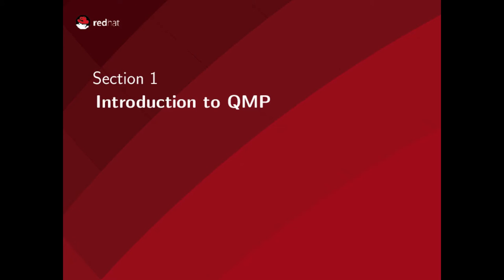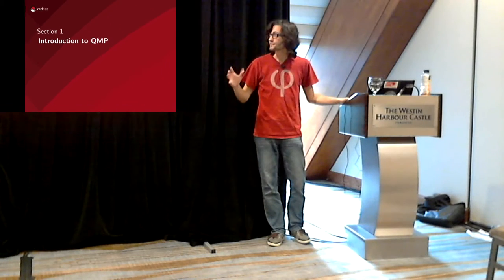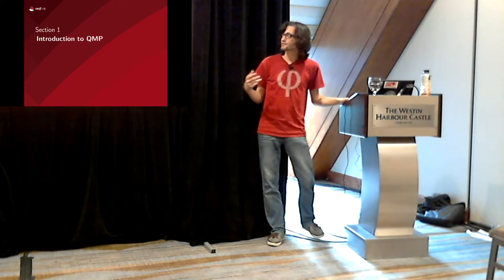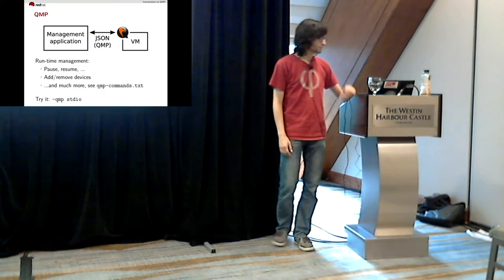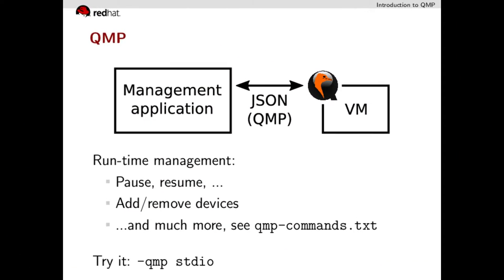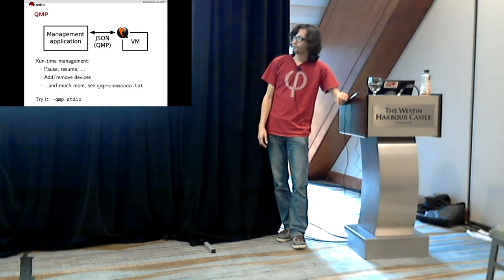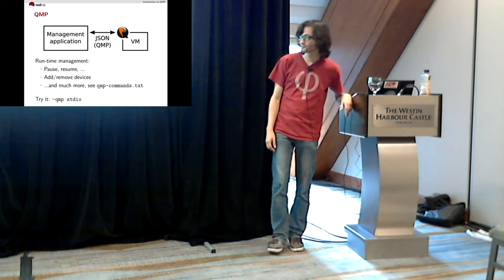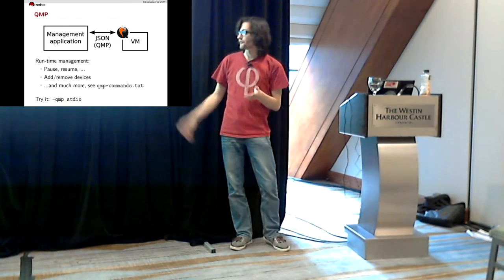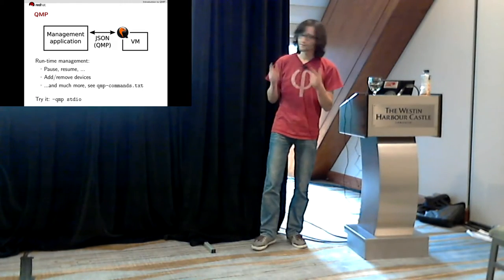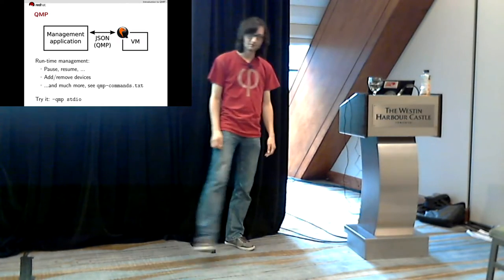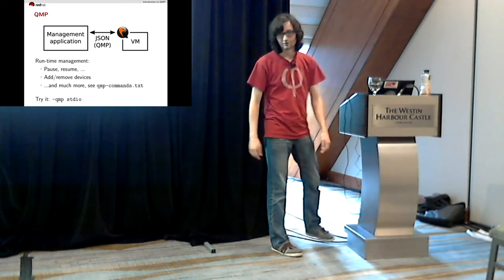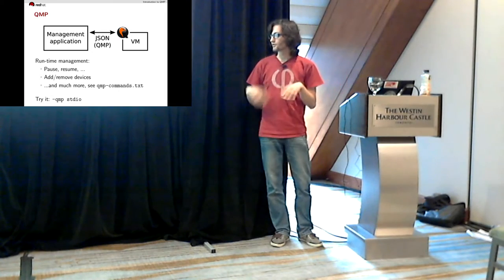First, we have to talk about the interface you use to access QEMU and tell it to do something, which Kashyap and John have already talked about — QMP. QMP stands for QEMU Monitor Protocol. As the name implies, it's mostly a protocol and API for management applications to control a virtual machine while it is running. For instance, libvirt can pause the virtual machine, resume it, add devices, remove devices, and much more. When you build QEMU, you get a file called qmp-commands.txt in the build directory, which contains all commands with descriptions and parameters.